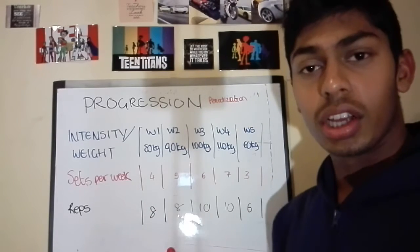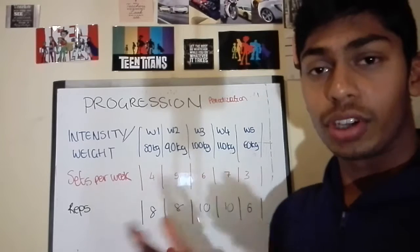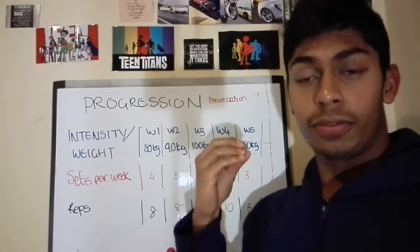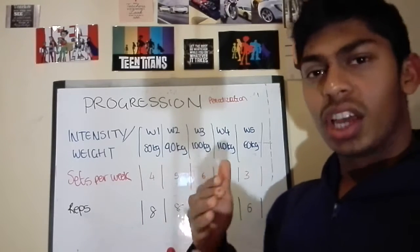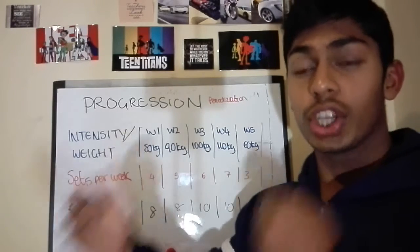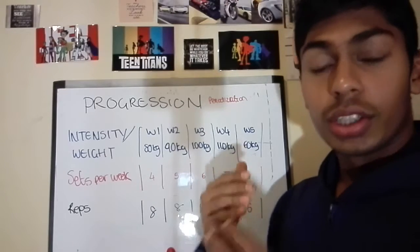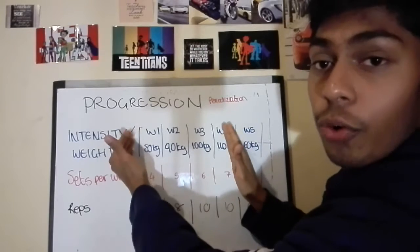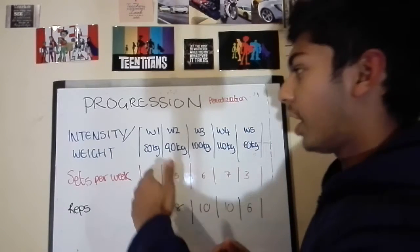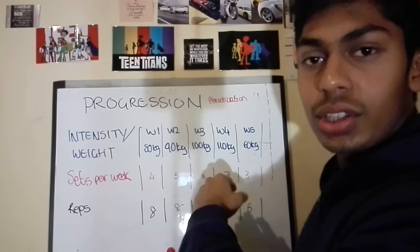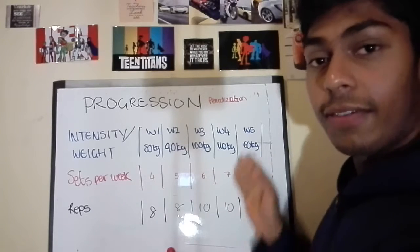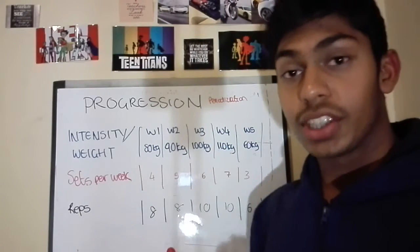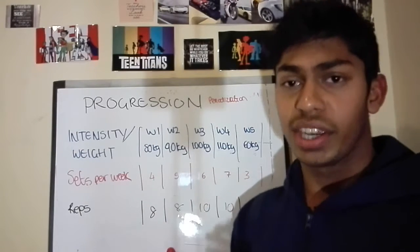Just some context for this talk: we're going to be discussing mesocycles. A mesocycle is one period of short-term training — anywhere between five to seven weeks. In my five-week example here, we're going to have four weeks on and one week off, meaning four overloading weeks per week and then one deload week where we dissipate fatigue, replenish substrates, and get ready for the next mesocycle.